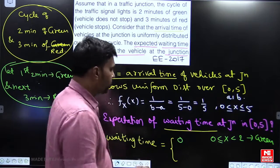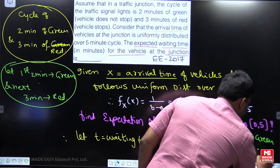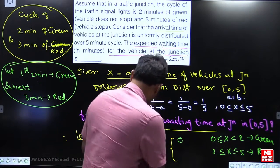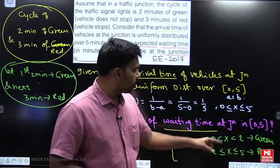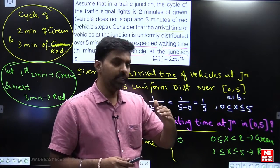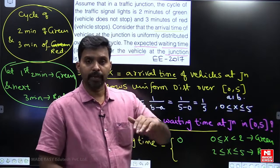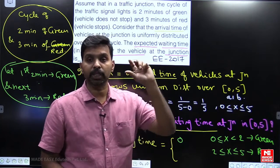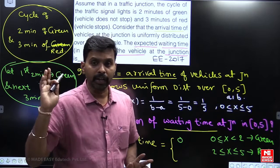For the next three minutes we have red signal. At the 5th minute, green signal will come again, because it is a cycle. So your waiting time is calculated with respect to the 5th minute. For example, if your arrival time is at the 2nd minute, you need to wait 5 − 2 = 3 minutes. If arrival time is the 3rd minute, waiting time is 5 − 3 = 2 minutes. If arrival time is the 4th minute, waiting time is 5 − 4 = 1 minute.